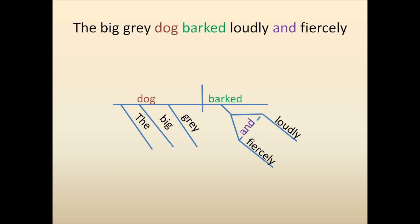Dog is the subject. It's on the left side. Barked is the verb. It's on the right side or the predicate side. The, big, gray, all describe dog. Loudly and fiercely describe how the dog barked. Let's go through it one piece at a time.